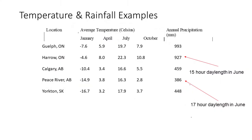This is some basic climate data from the regions we've been discussing, and I think they illustrate quite well the differences in climate. Looking at annual precipitation, we have a lot more rainfall in Ontario. Looking at average temperatures over the growing season, you can see that it's a lot warmer as well.